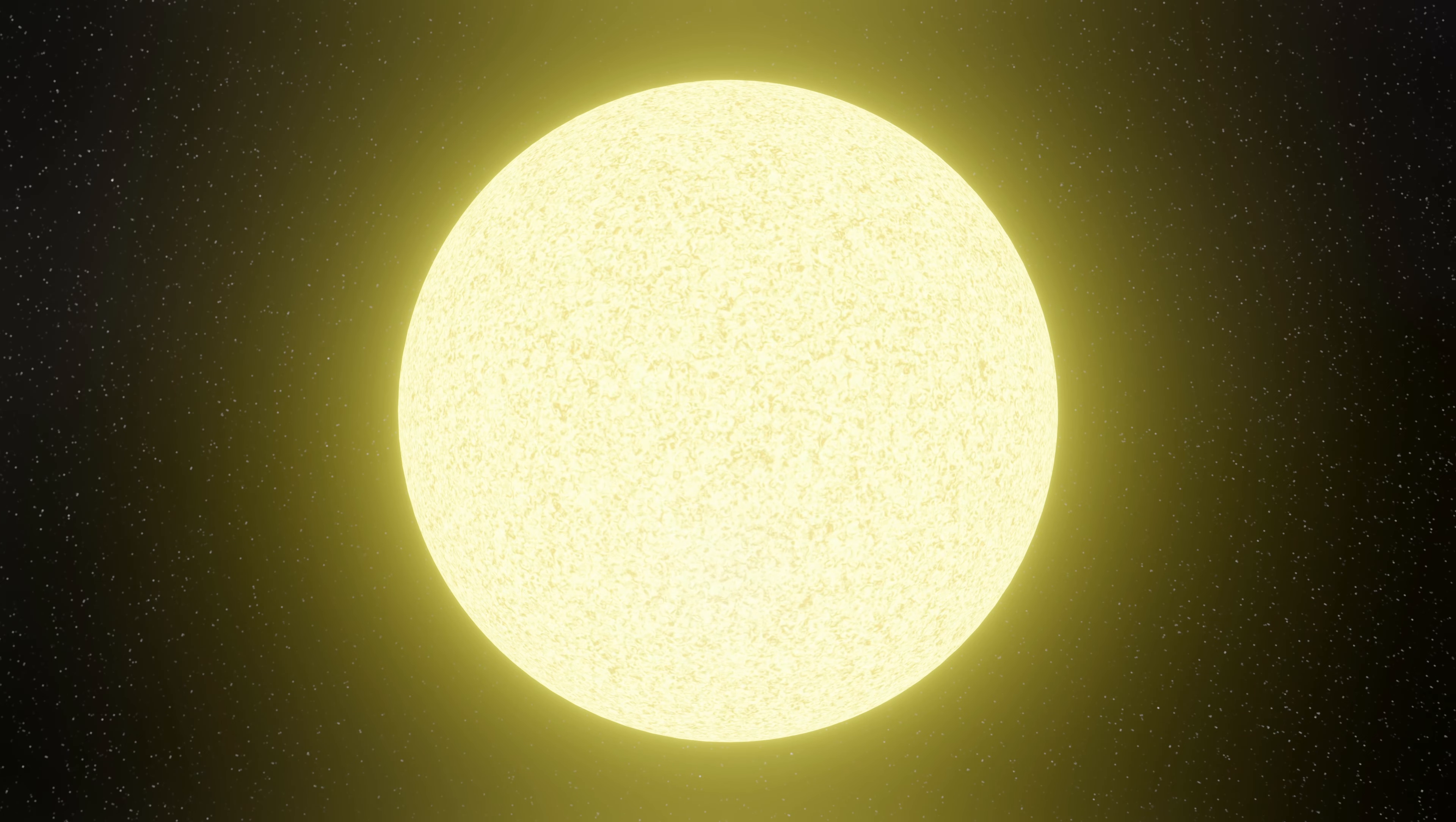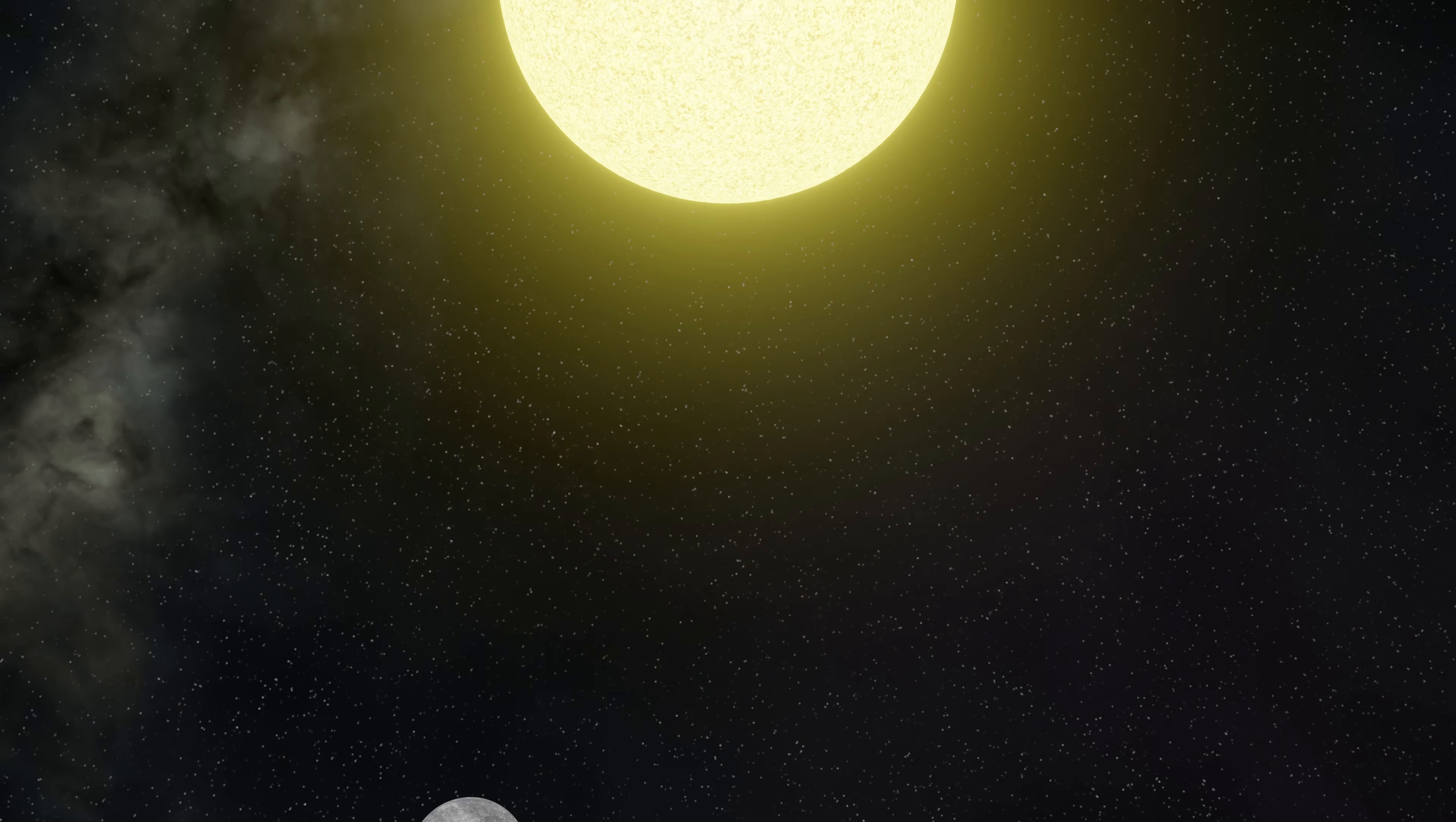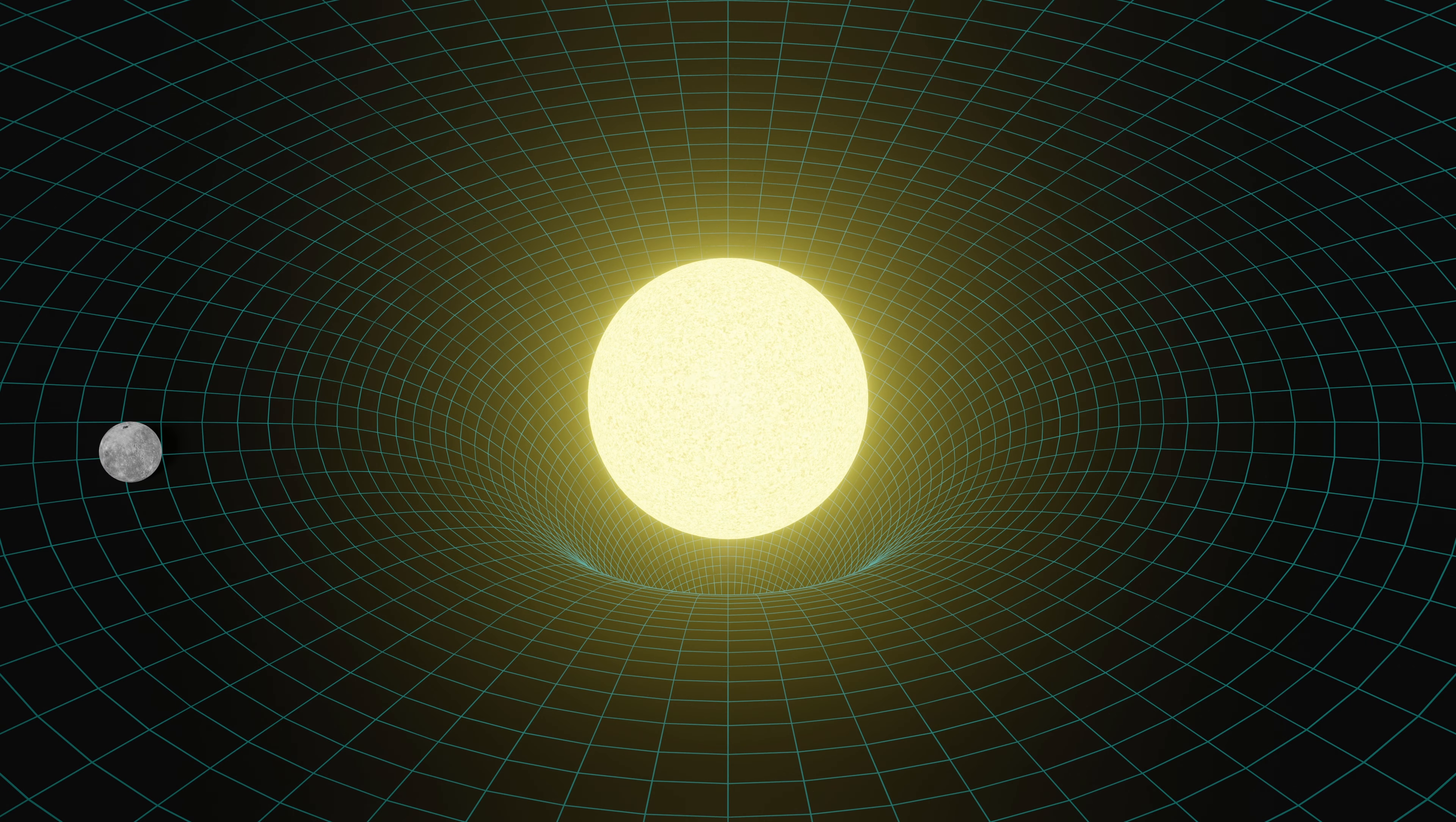The orbit of the planet Mercury is a bit strange and doesn't act exactly as expected. This was such a problem that we even invented another planet to account for its weird orbit. In fact, it's this strangeness that provided evidence that Einstein was right all along.